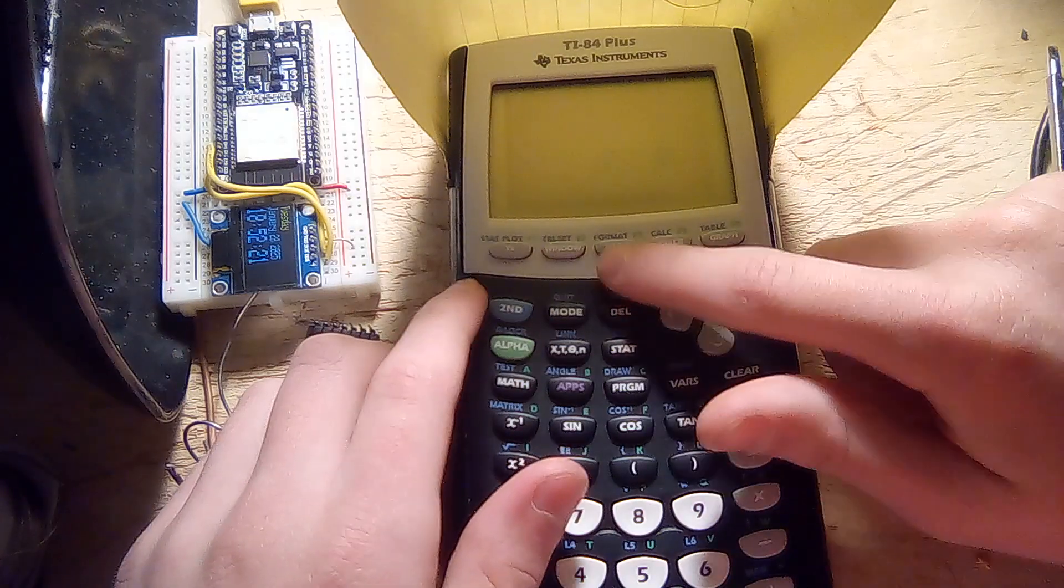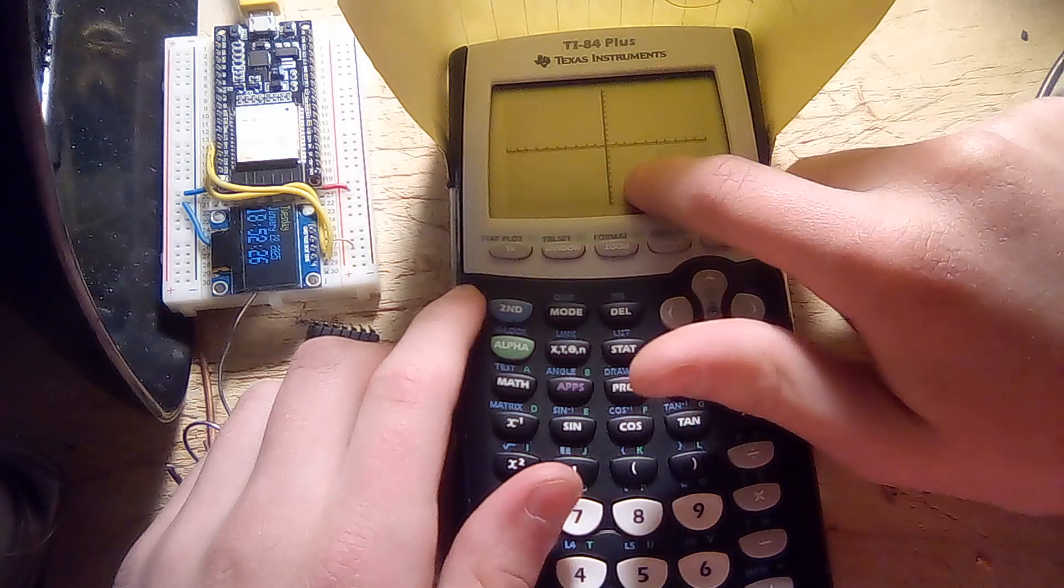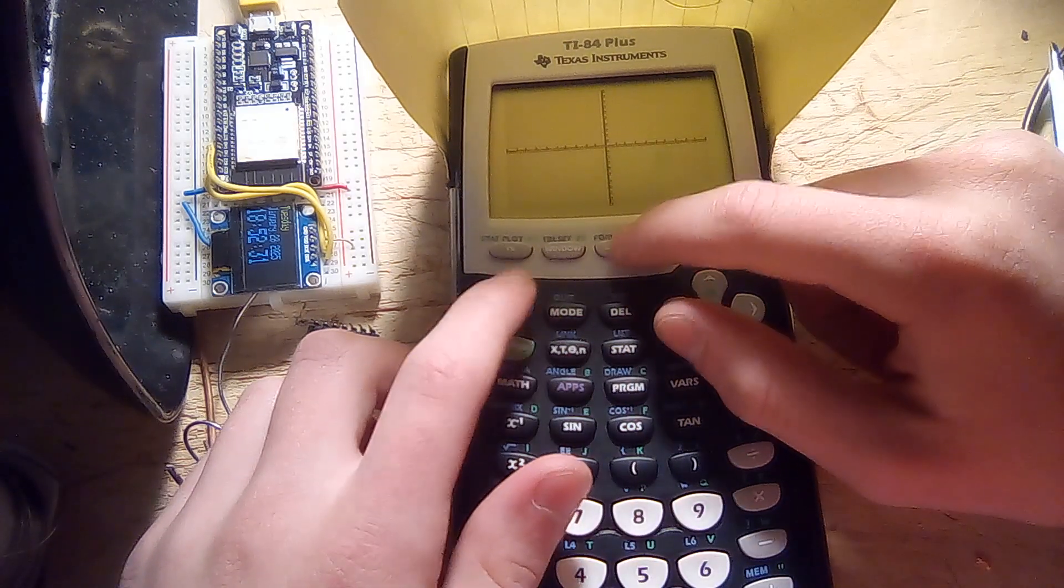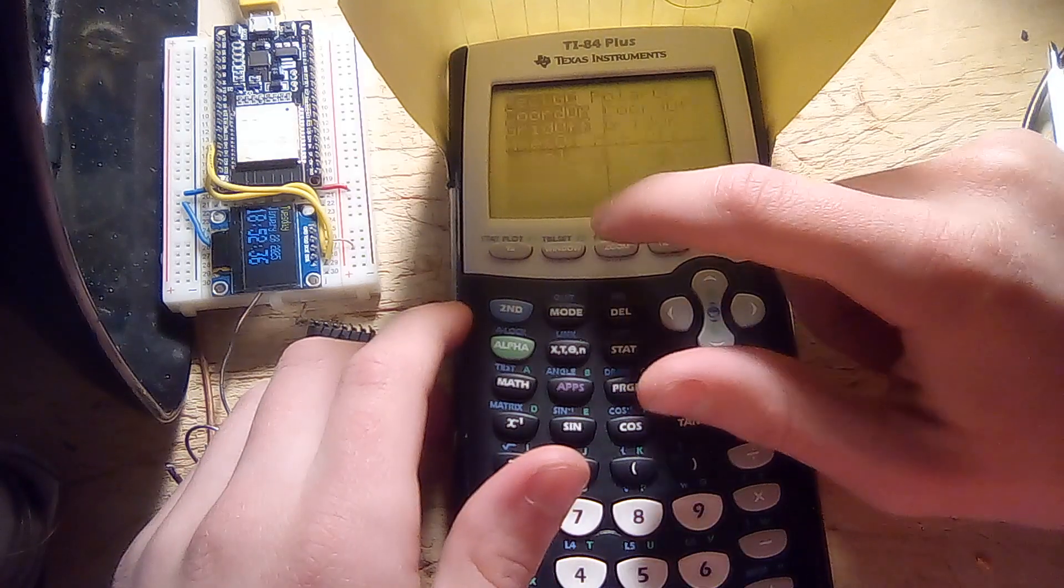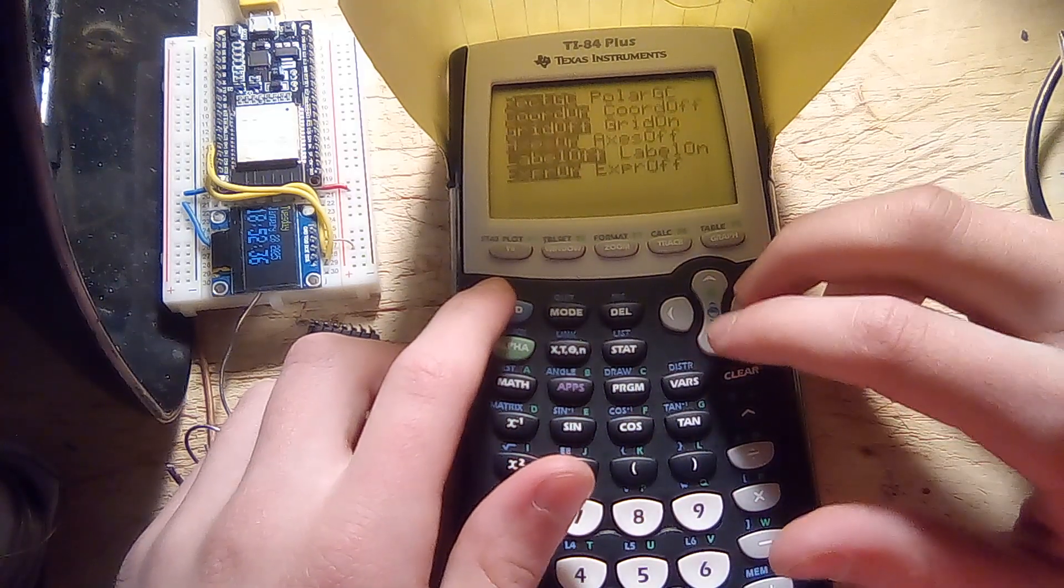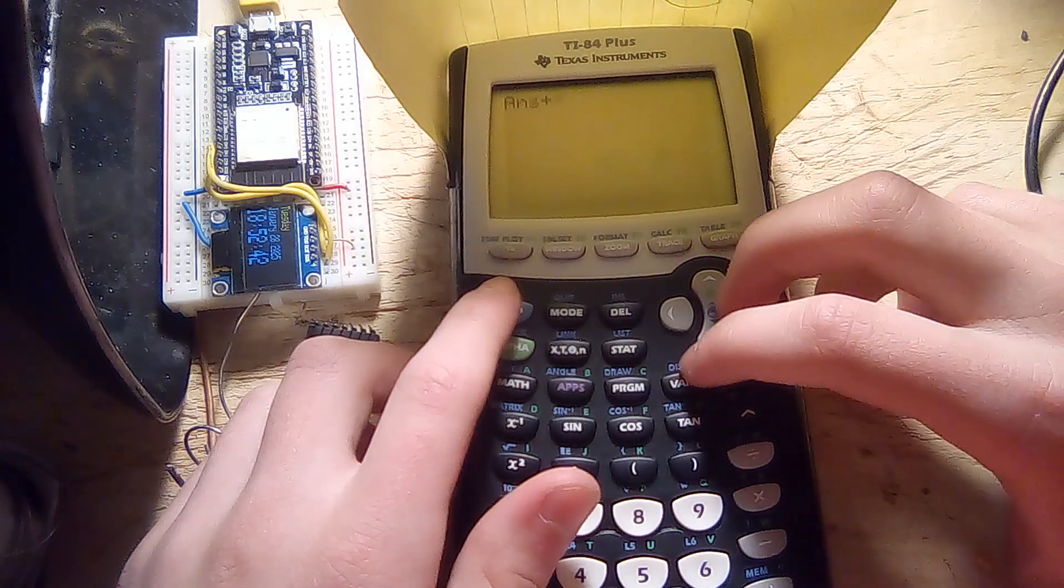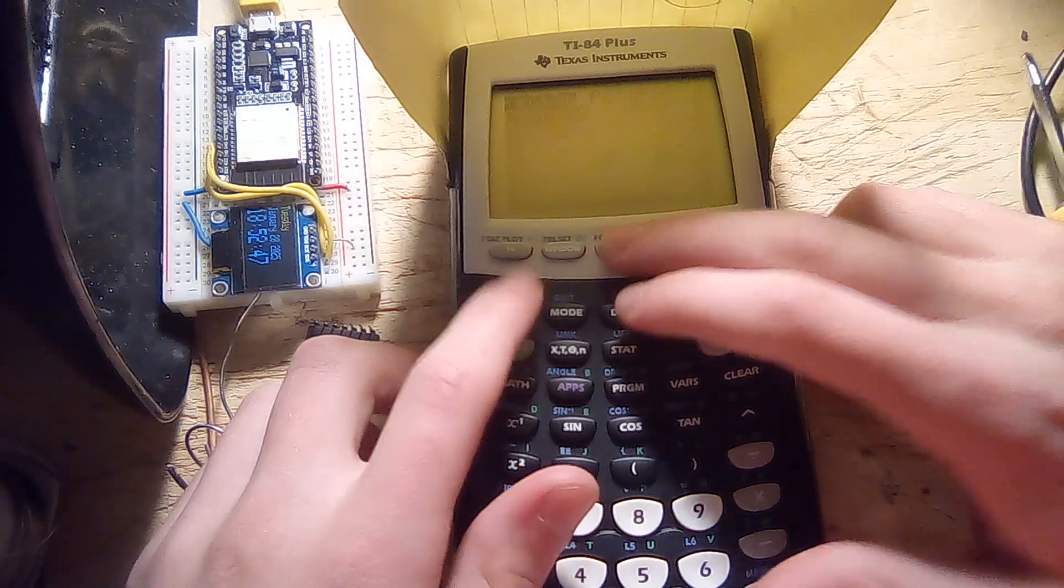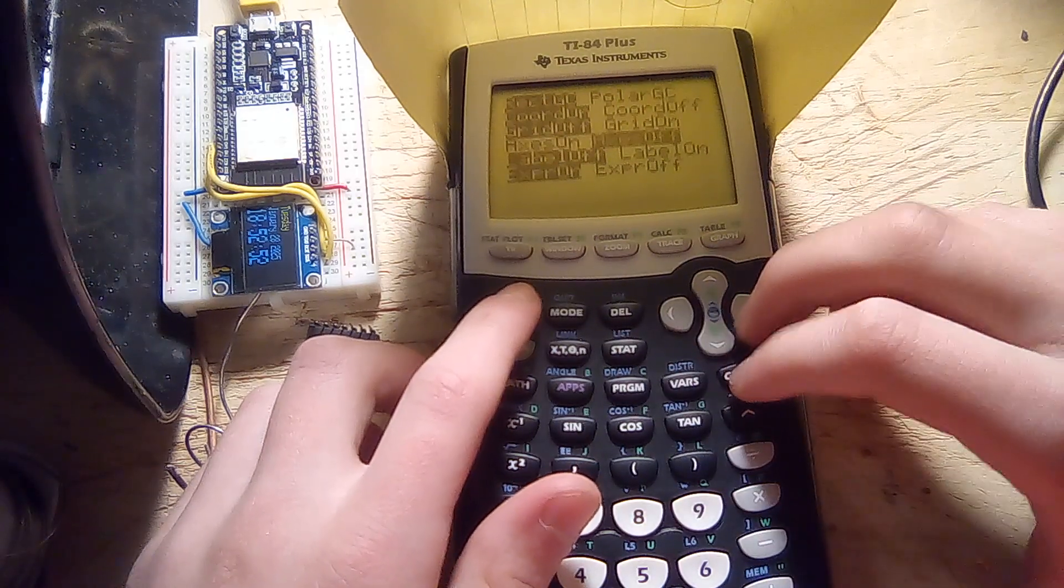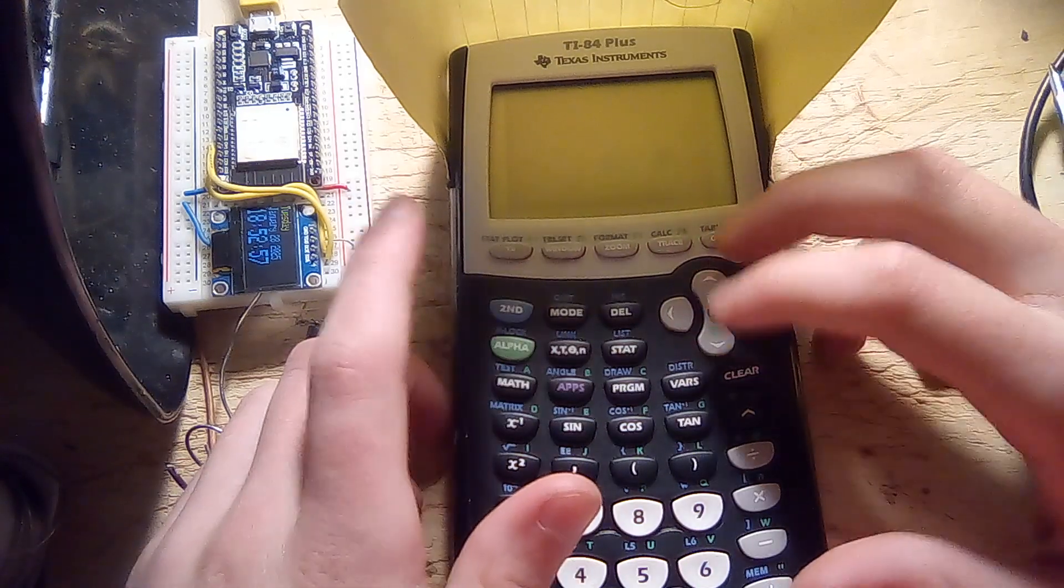So the first thing that you would want to do is, in the graph setting, by default there's this grid over here and I want to remove that. So if I just do second and then format, then I can put axes on—I can change it to axes off. Oh, wrong thing there. I can change it to axes off. And now the graph is just a completely blank canvas.